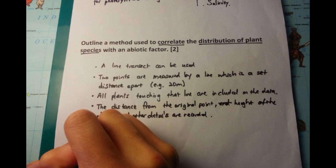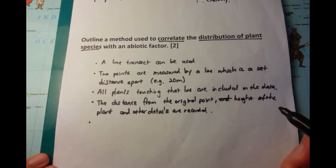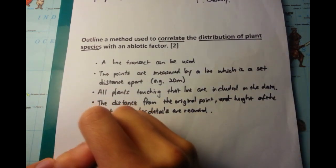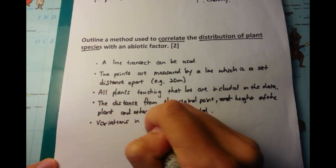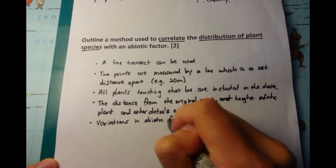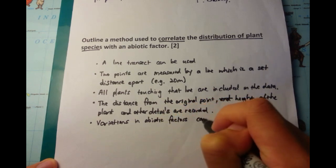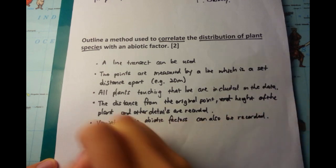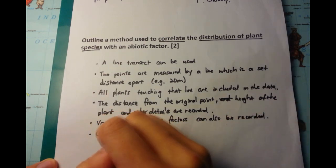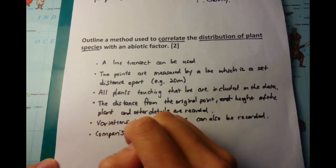You also want to record the height as well and other details that are available. You might also want to record any other abiotic factors that are available, such as the pH or the amount of water, and then you can correlate the growth of particular plants with the abiotic factors which are present.